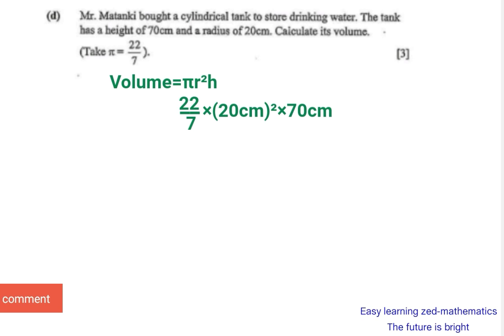Now evaluate 20 centimetres squared. That gives us 400 centimetres squared. So we now have 22 over 7 times 400 centimetres squared, multiplied by 70 centimetres.